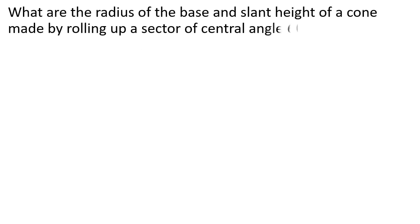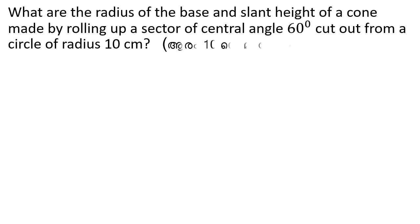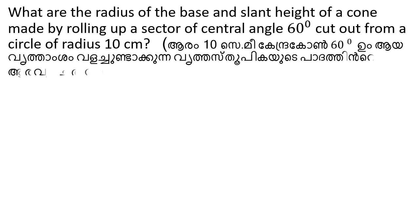What are the radius of the base and the slant height of a cone made by rolling up a sector of central angle 60 degrees cut out from a circle of radius 10 cm?